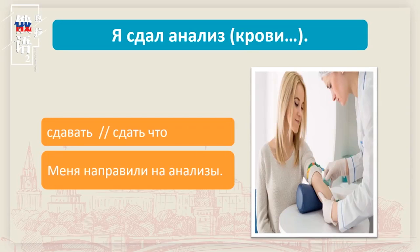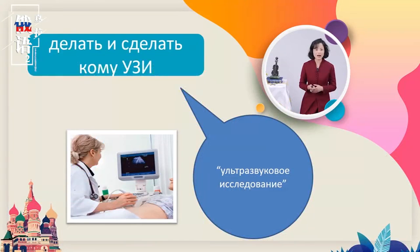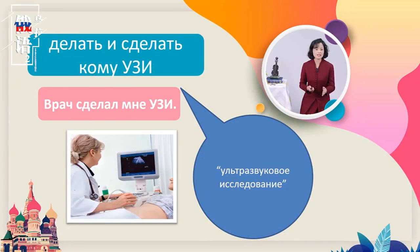去化验的地方：меня направили на анализ。化验血常规怎么说呢？医生在我这里拿了血去进行常规分析，这是俄语思维。要说：у меня берут кровь на общий анализ。берут在这里是不定人称句的形式，人称是они，来自动词брать。血常规：кровь на общий анализ。